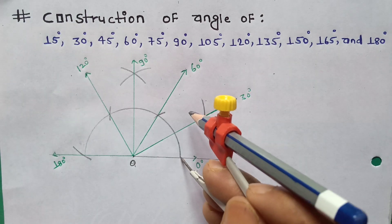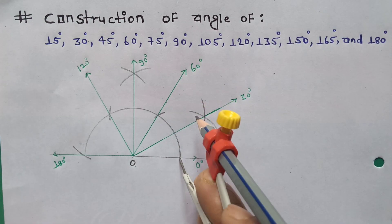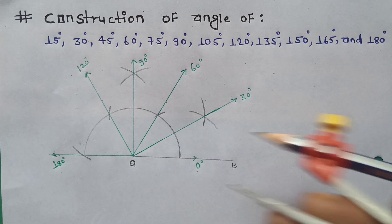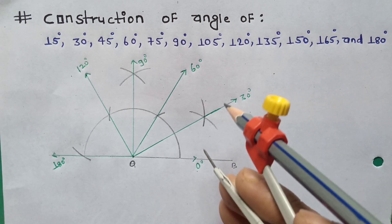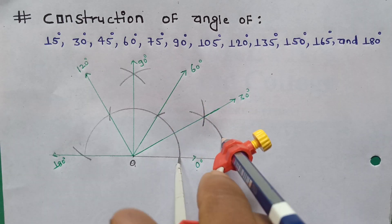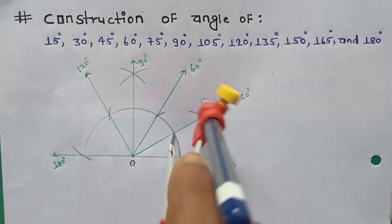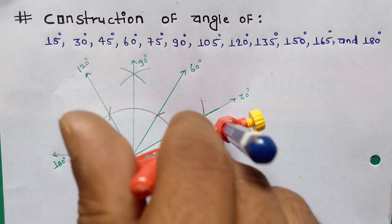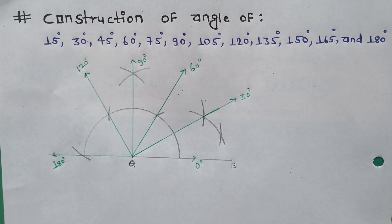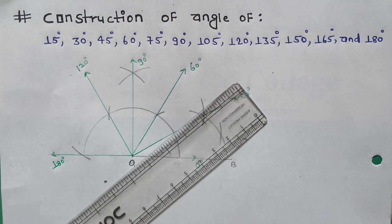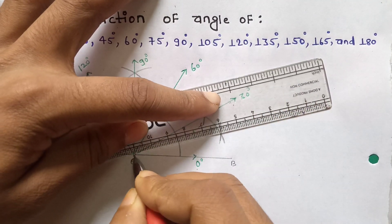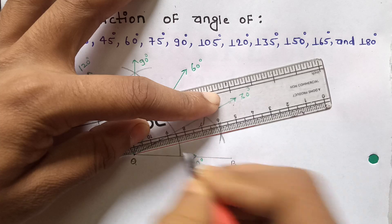From this point and this point, we cut like this — this will be 30 degrees. Now if we need 15 degrees, from 0 degrees we can cut the line and from 30 degrees we can cut the line, because the middle value of 30 is 15 degrees. So from 30 and 0 we get 15 degrees. This line is 15 degrees.